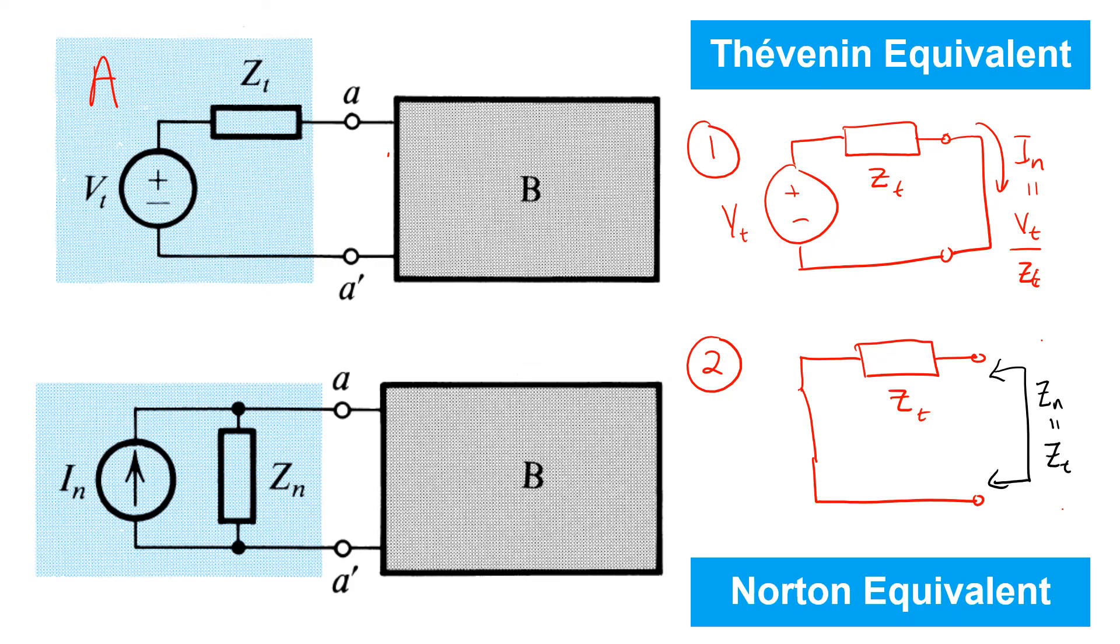So Norton and Thevenin equivalents can be translated one directly to the other by simply recognizing that Vt equals In times Zt, and that the impedances for the Thevenin and Norton equivalents are the same.